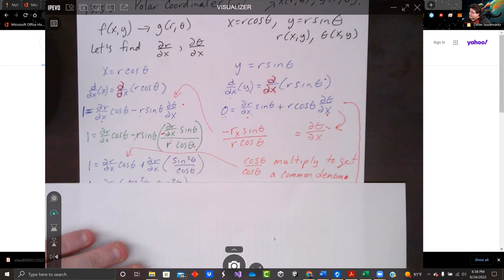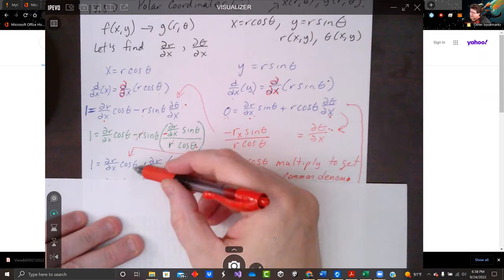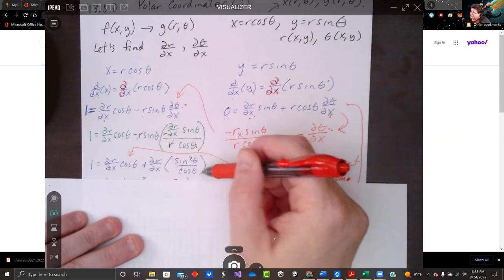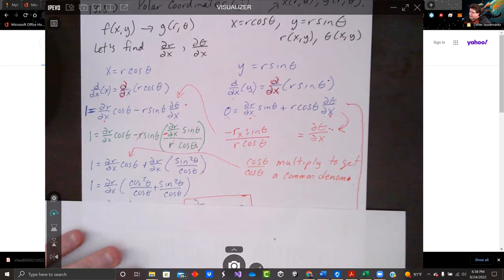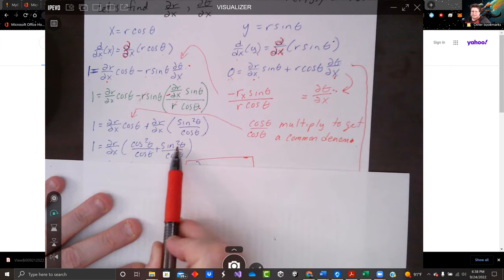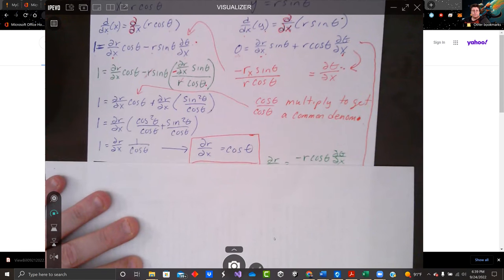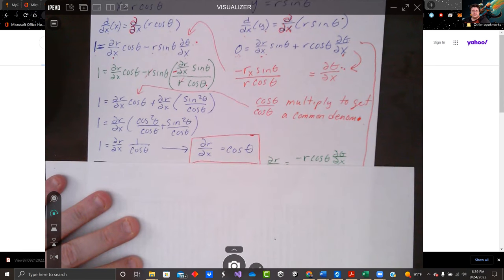That was just me cleaning up right here. I'll multiply this one by cosine theta over cosine theta to get a common denominator. And now I've got the partial of r with respect to x. Notice we got cosine squared plus sine squared on top with cosine theta on bottom. So the partial of r with respect to x is just cosine theta. That's pretty handy.